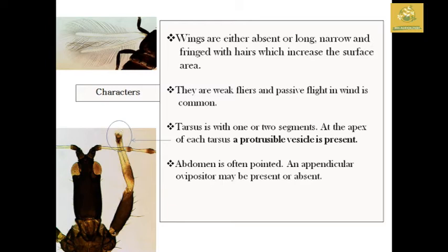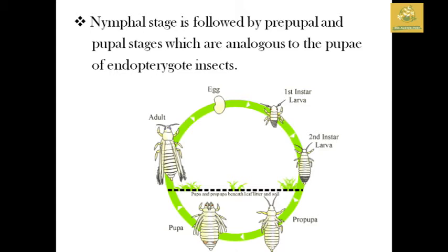The appendicular ovipositor may be present or absent. The life cycle includes a nymph stage, a pre-pupal stage, and a pupal stage.